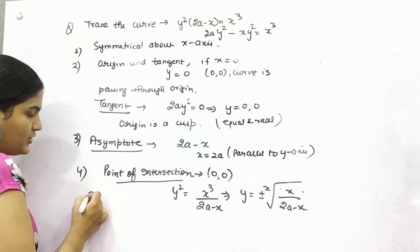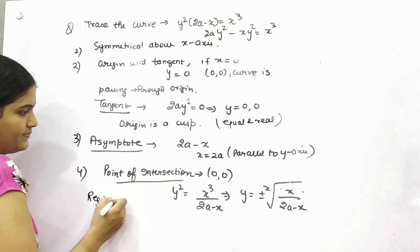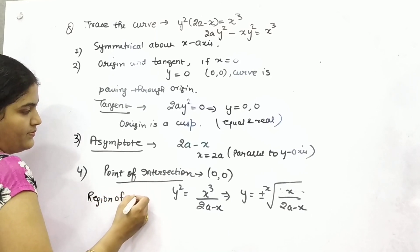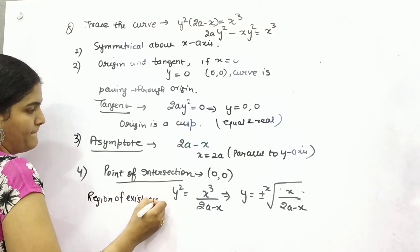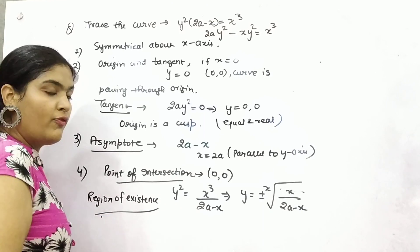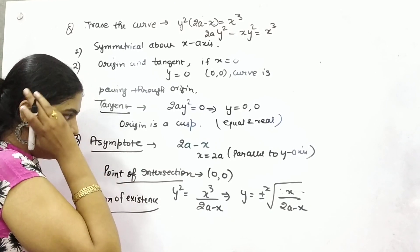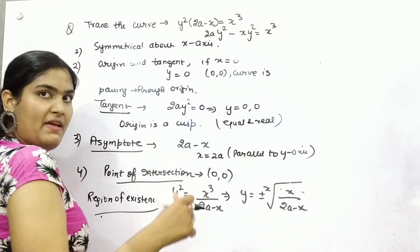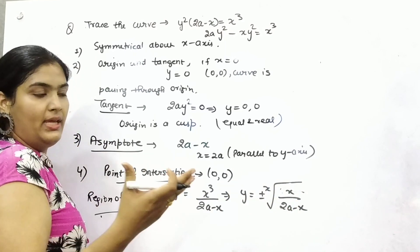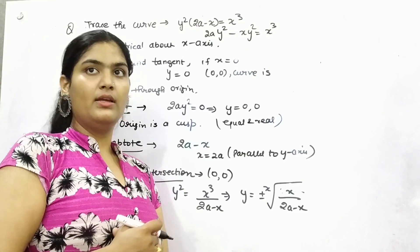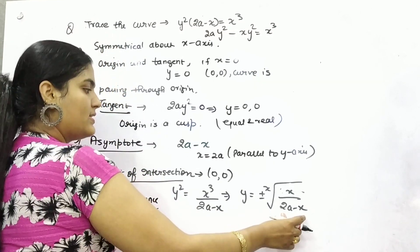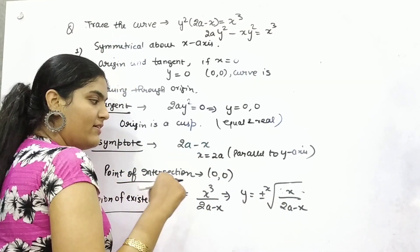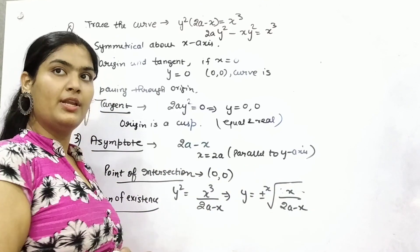Now for region of existence, you can see what is the value for which it can or cannot be real. You can see that if x is negative, then it will be an imaginary number.